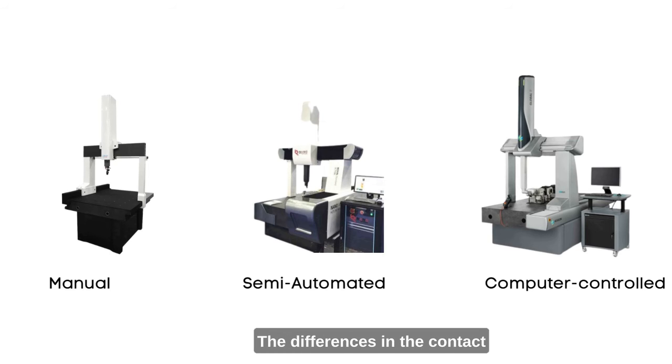The differences in the contact positions are the measurements. A semi-automatic machine is provided with an electronic digital display for measurement.